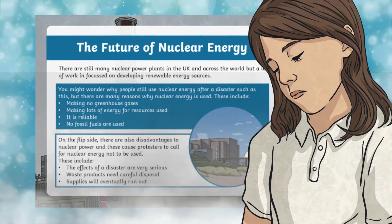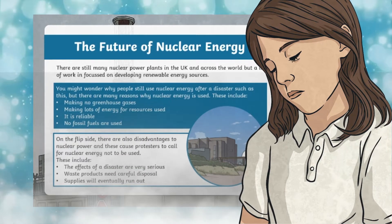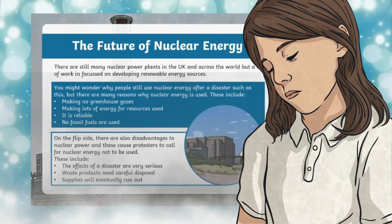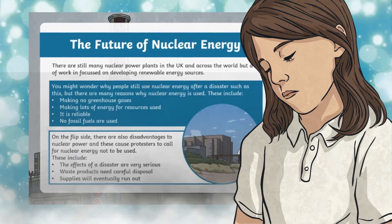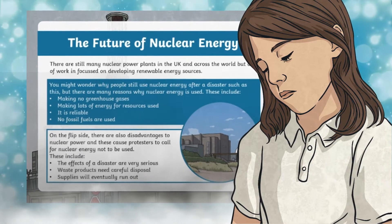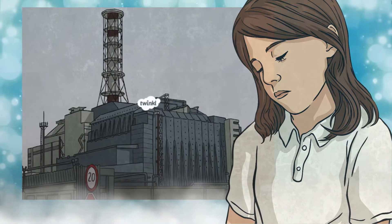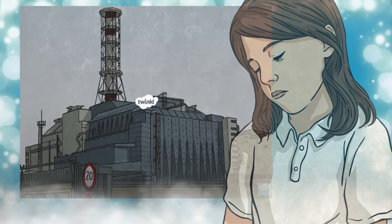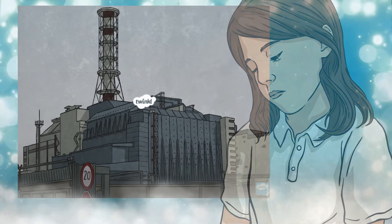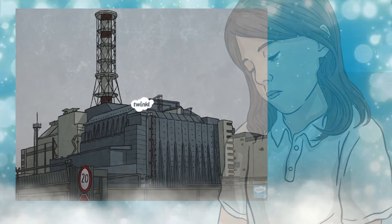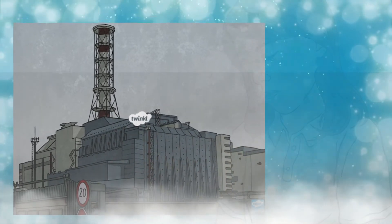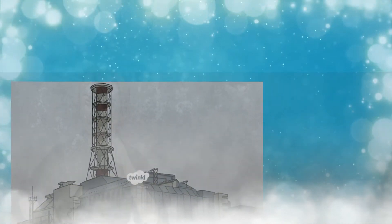It's very difficult to put a number on how many people died or will die from the radiation from this disaster, but estimates range from 4,000 to 90,000 because of all the related health problems that can be triggered by radiation, such as some cancers.